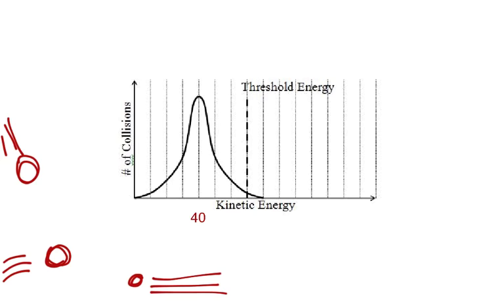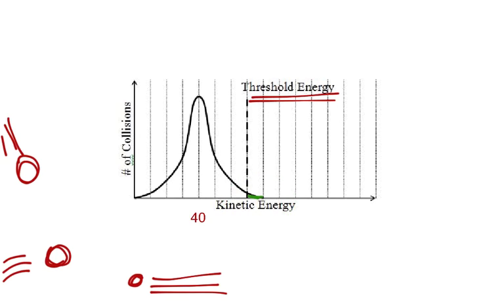For this kind of thing, the threshold energy is just the amount of energy that particles need when they collide into each other so that they can react. So this little area right here is the number of particles that would be able to react at this temperature. Now, temperature is average kinetic energy. Looking at this curve, you can see here's the peak, and it peaks out here at 40, if we say each of these lines means 10. So this would be the graph for a sample of a substance at 40 degrees Celsius.